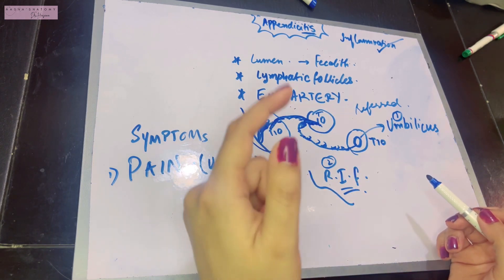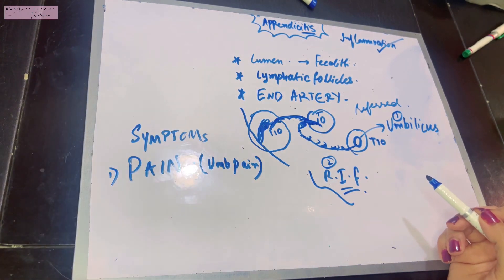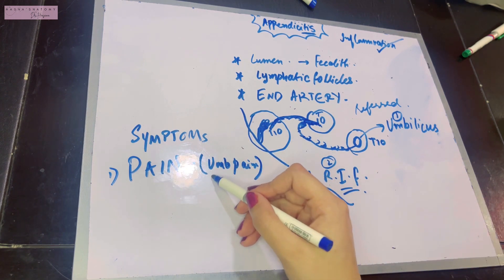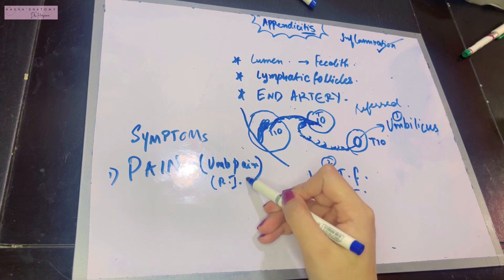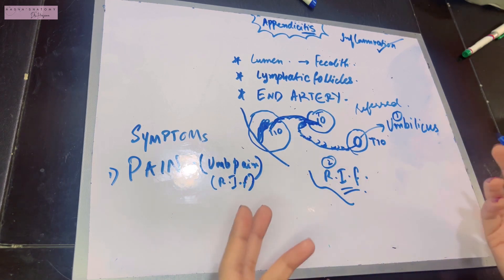When pain comes to the right iliac fossa, it's a sign of danger. You need to carry out quick action in the form of appendectomy. Other symptoms the patient will experience include vomiting and nausea.